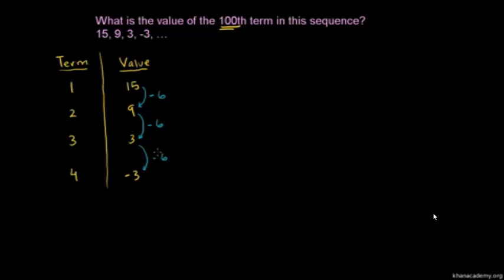So whatever term you're looking at, you subtract negative 6 one less than that many times. Notice: for the first term, you have 15 and you subtract negative 6 zero times. So you could write this as 15 minus 0 times negative 6. That's what that first term is.